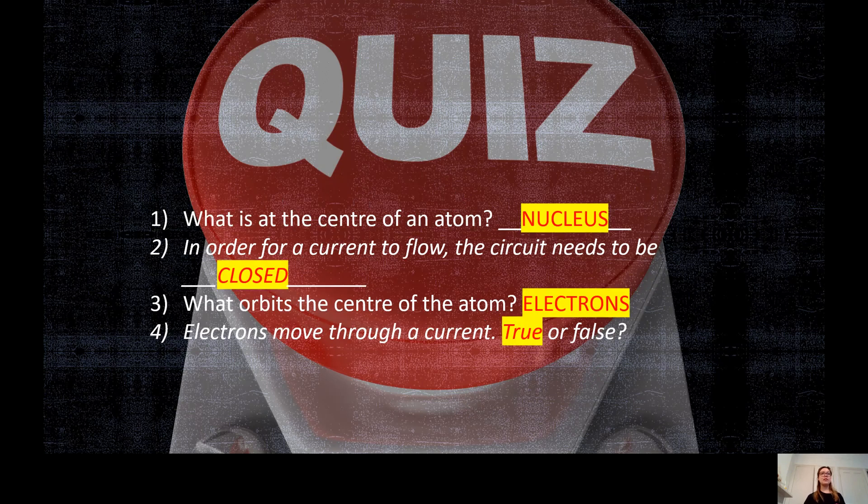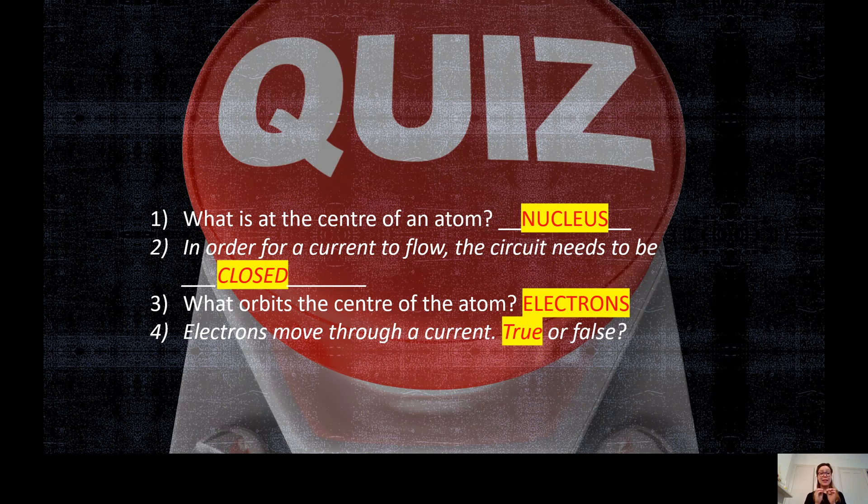So what is at the centre of the atom? It is the nucleus. The nucleus is in the middle of the atom. In order for a current to flow the circuit needs to be closed. If it's open, if there's a gap, then the current won't flow and the light bulb will not shine.